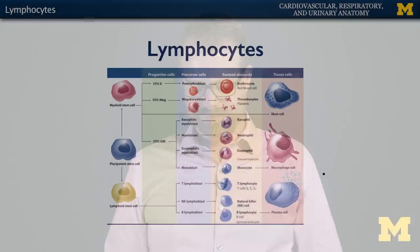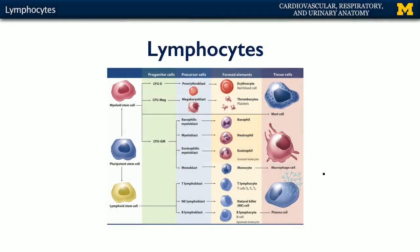Let's talk about lymphocytes. Lymphocytes, or the cells of the lymphatic system, are derivatives of lymphoid stem cells. These lymphoid stem cells go through their various stages of progenitor and precursor cells into their mature, formed elements. And they fall into three categories.